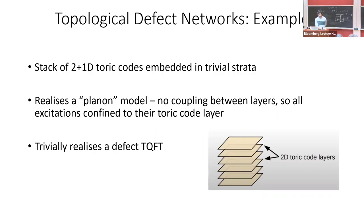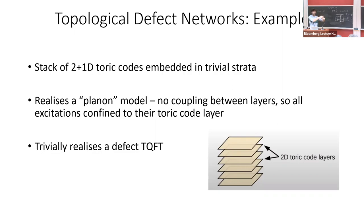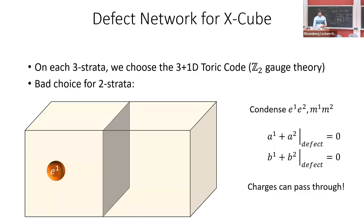Here's a simple defect network: a trivial one. Take a stack of 2D toric codes. Trivially, the excitations can only move in planes — I got planons for free because there's no coupling between the layers. If there's an M anyon sitting in one layer, it can only move within that layer. The non-triviality would come from coupling these layers together.